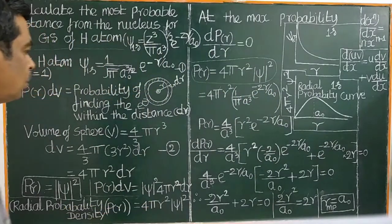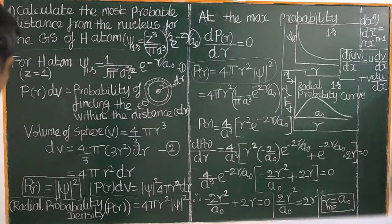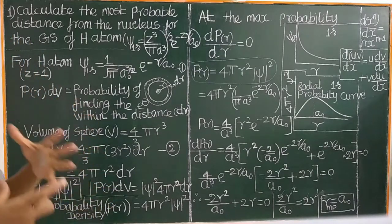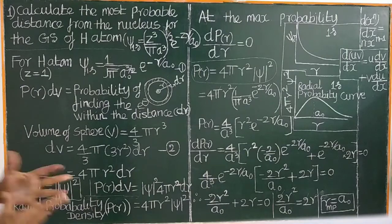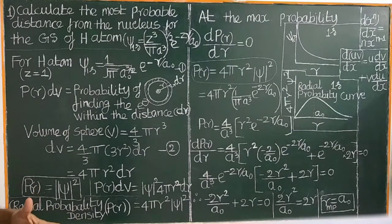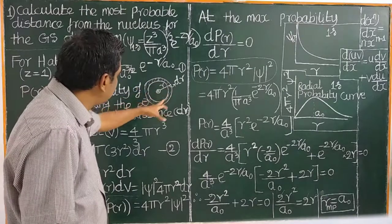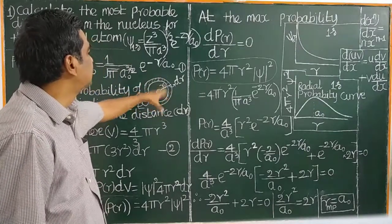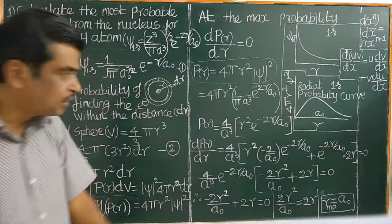The most probable distance equals one Bohr radius, a₀. In this way, we have studied how to derive the radial probability density function and how to calculate the most probable distance of the electron from the nucleus for the 1s orbital of hydrogen.